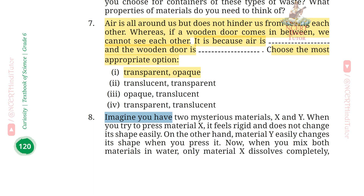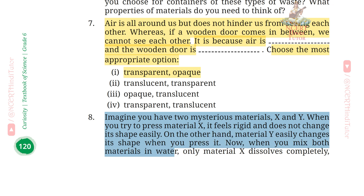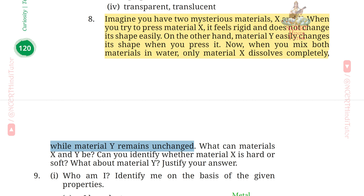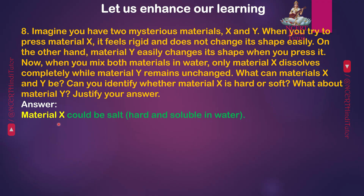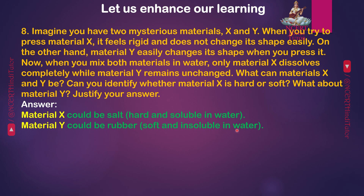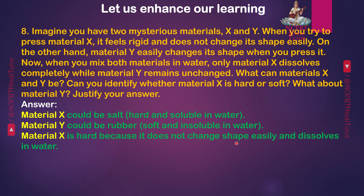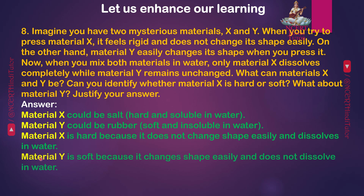Q8: Imagine you have two mysterious materials X and Y. When you try to press material X, it feels rigid and does not change its shape easily. Material Y easily changes its shape when you press it. When you mix both materials in water, only material X dissolves completely, while material Y remains unchanged. Answer: Material X could be salt — hard and soluble in water. Material Y could be rubber — soft and insoluble in water. Material X is hard because it does not change shape easily and dissolves in water. Material Y is soft because it changes shape easily and does not dissolve in water.